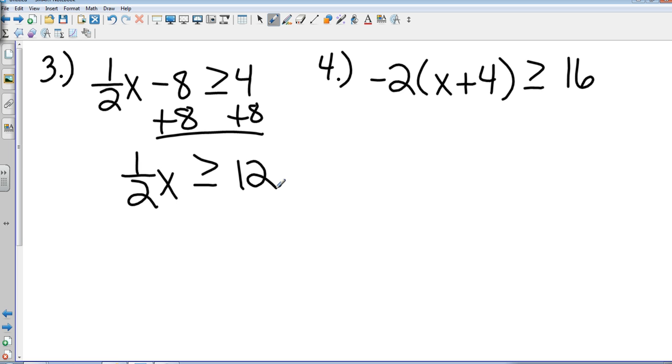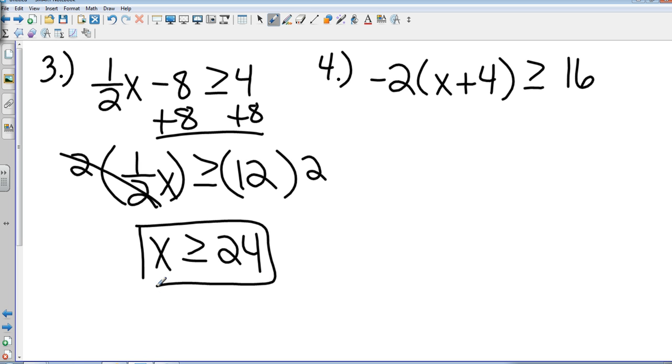Ryan, what do I do with that 1 half? You multiply the reciprocal over 1. Okay, so what's the reciprocal of 1 half? 2 over 1. I'm just going to leave it as 2 because that's going to make it easier on that side. That cancels. Gives me x is greater than or equal to 24. How many had that answer? Good. I like a lot of hands up.